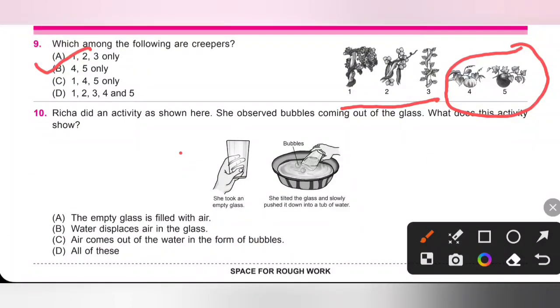Tenth one, Richard did an activity as shown here. She observed bubbles coming out of the glass. What does this activity show? So she took an empty glass, tilted the glass slowly, pushed it down into a tub of water. So bubbles are coming out. So option A, the empty glass is filled with air - true. B, water displaces air in the glass - also true. C, air comes out of the water in the form of bubbles - true.